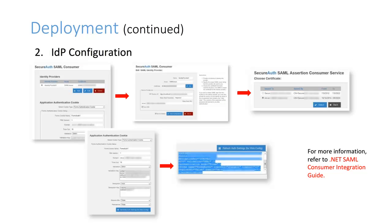Then configure SecureAuth SAML Consumer within SecureAuth IDP using the series of steps shown here. For more information on installing and configuring .NET SAML Consumer, refer to the .NET SAML Consumer Integration Guide.